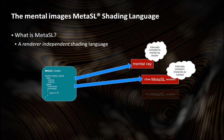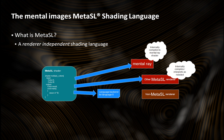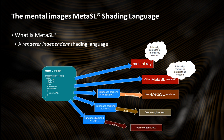If you have some renderer that does not support MetaSL directly, the interesting concept with MetaSL is that you have what is known as a language backend. So you have a language backend for a particular shading language used by some other renderer. This language backend converts the MetaSL to whatever other shading language is used in that renderer. There are already language backends for stuff like HLSL, CGFX, etc., with a lot of people using game engines and similar things.